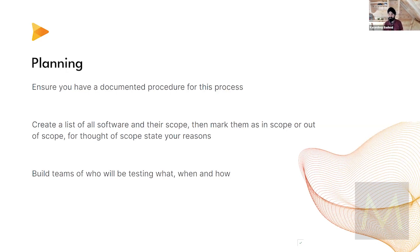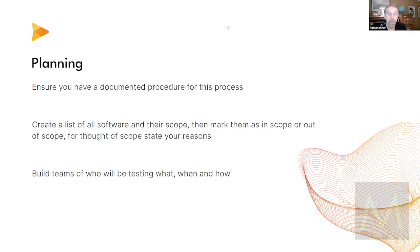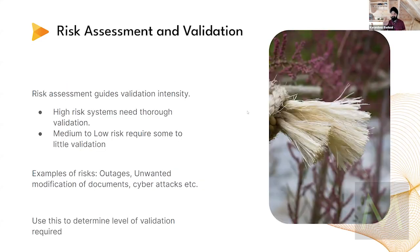Ross asks: how deep do you go? If software uses Google or AWS tools, which use public domain modules, which use programming — how deep are you responsible for going? Karandeep says he's coming on to that in the next few slides. Moving on to risk assessment: high risk systems need a thorough validation and we need to dig deep. Medium to low risk require some to little validation.